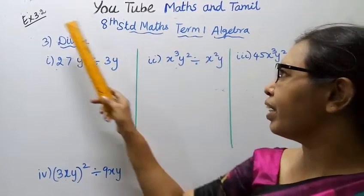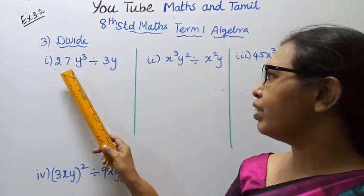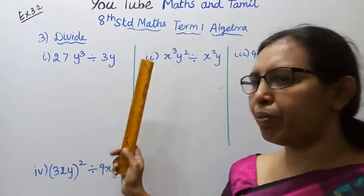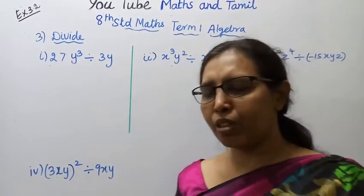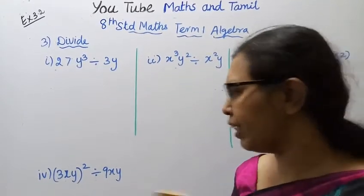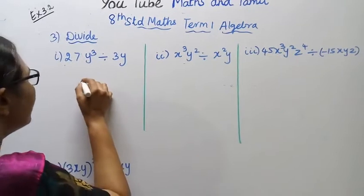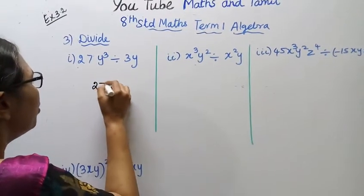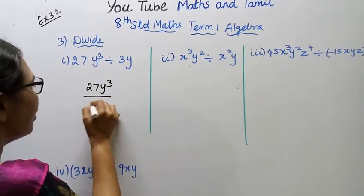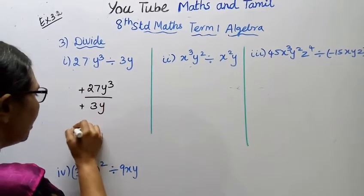H and Max Tamil Algebra exercise 3.2, third sum: 27y cube divided by 3y. First, we look at the sign, then the number, then the alphabet — but this is division.